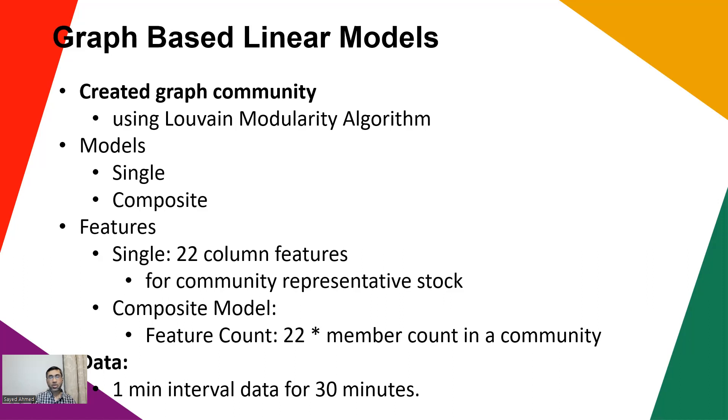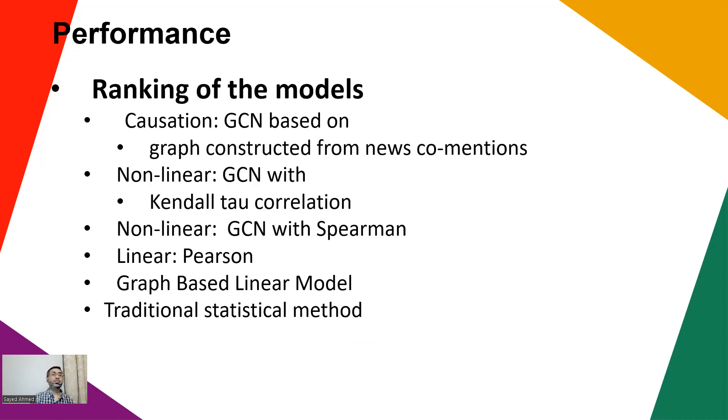On the composite model, they collect features for all the stocks in the community and create this feature matrix: 22 times the number of nodes in the community. For each stock, they collect 22 features, pass it to the composite model, the composite linear regression, and they predict the stock price.